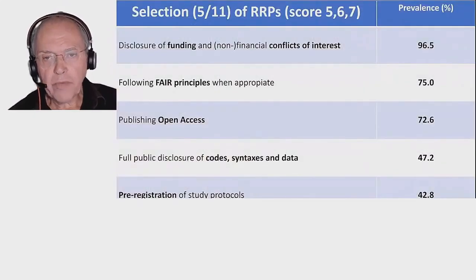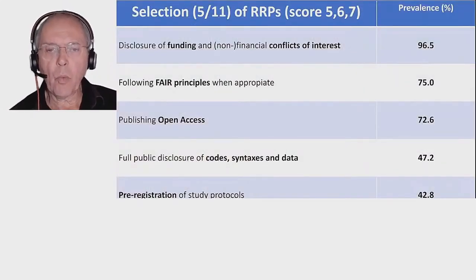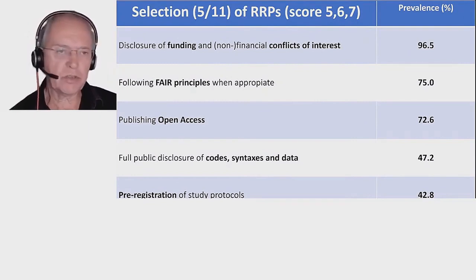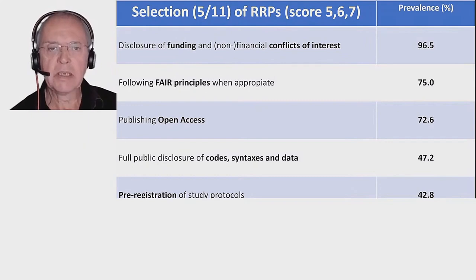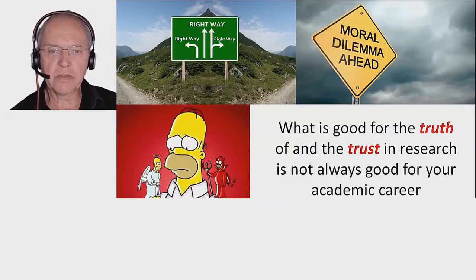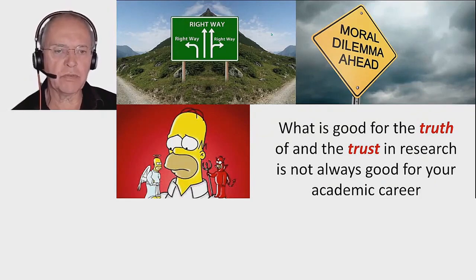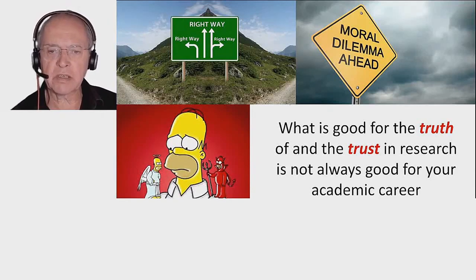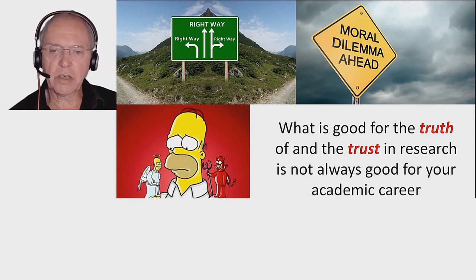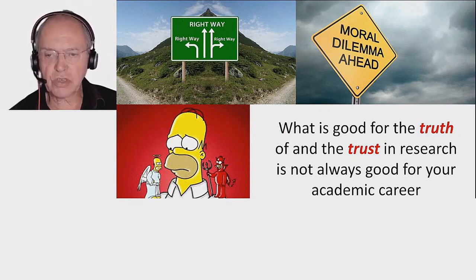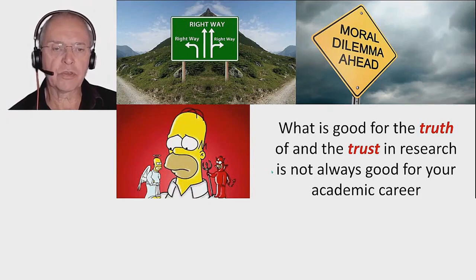One may wonder why some researchers don't completely behave responsibly. There are many answers to that, and Daniele Fanelli also alluded to some of them. I'll keep it simple and say the reason is that they have a dilemma. A really important dilemma is that what is good for the validity of research, for truth-finding, and for trust in research is not always good for your career.